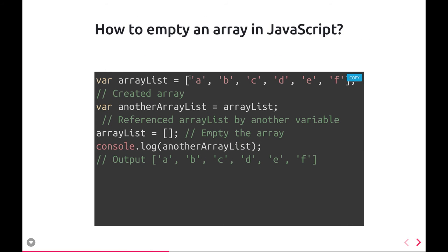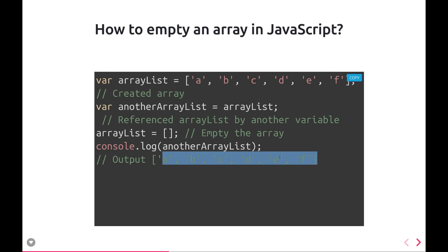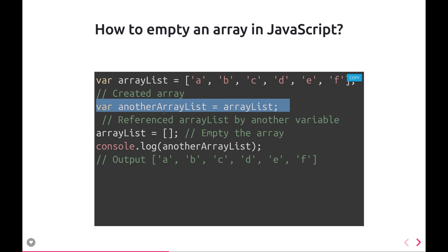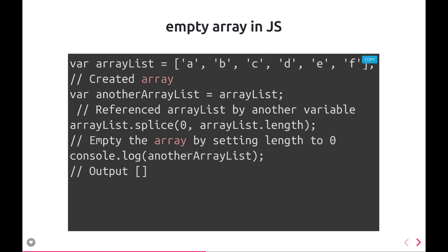What is the way to empty an array? One simple approach: create another array and just make the arraylist empty. When you do console.log the output is still the original values, because if you assign arraylist to another arraylist and then set yourself to empty, you become an empty array but the reference is still assigned to another array. We can also use the splice method — a JavaScript array method used to create a duplicate without a shared reference.